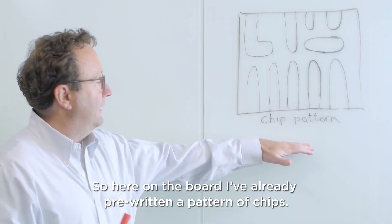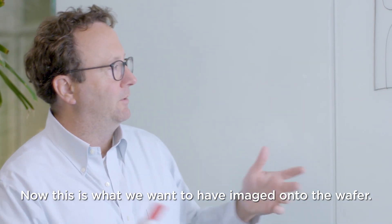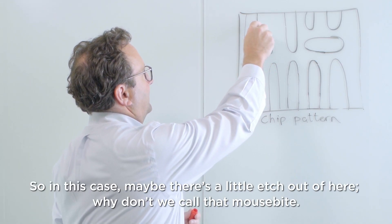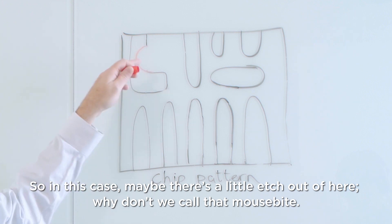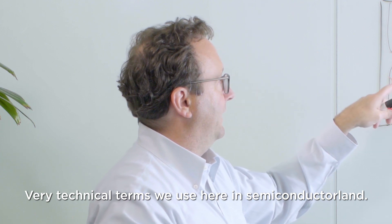So here on the board I've already pre-written a pattern of chips. Now this is what we want to have imaged onto the wafer. Now defectivity means something went wrong so in this case maybe there's a little etch out of here. Well we call that mouse bite. Very technical terms that we have here in semiconductor land.